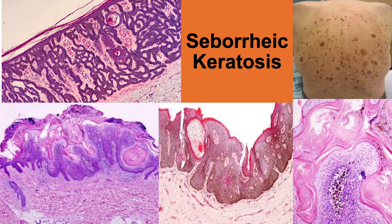The sudden appearance or increase in number and size of seborrheic keratoses in association with internal malignant disease is known as the Leser-Trélat sign.